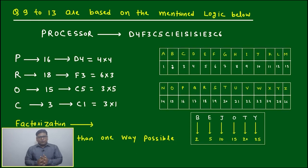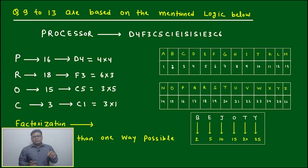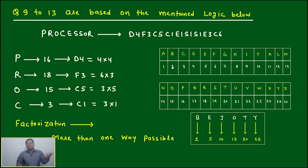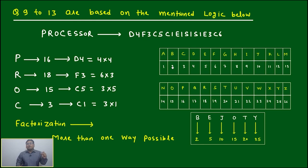Now we'll encounter the caselet format, because the logic will be so complicated that giving only one question won't be worthwhile. So they make it in the form of a caselet — two, three, or four questions combined. Here I've made one caselet where questions 9 to 13 are based on the mentioned logic.